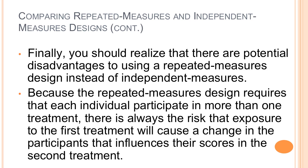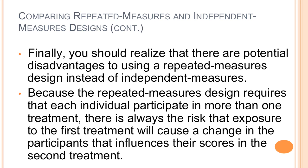There are potential disadvantages to using a repeated measures design instead of independent measures. Because repeated measures requires each individual to participate in more than one treatment, there's always a risk that exposure to the first treatment will cause a change in participants that influences their scores in the second treatment — usually related to memory. If someone takes a pretest and then exam one, they may remember something from the pretest and do better than if they hadn't. An easy way to address this is to ensure enough time between the pretest and the first test so participants forget. Practice on the first treatment may cause improved performance in the second — the difference is caused by order effects or memory, not the treatment itself.